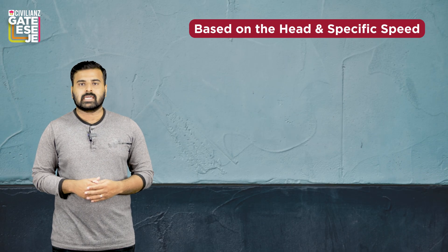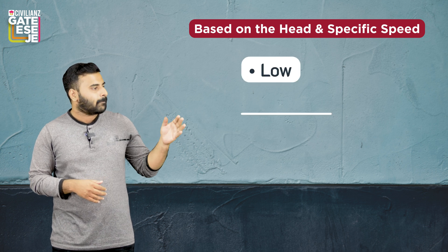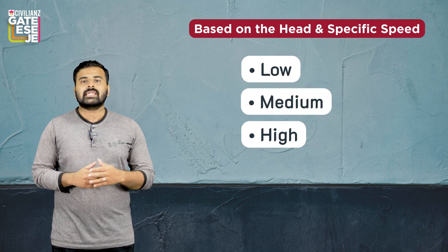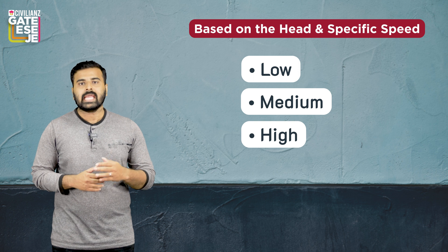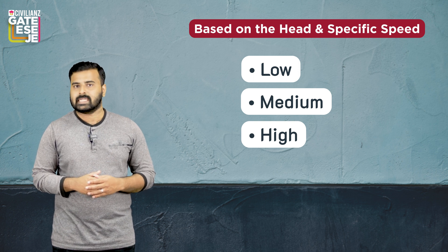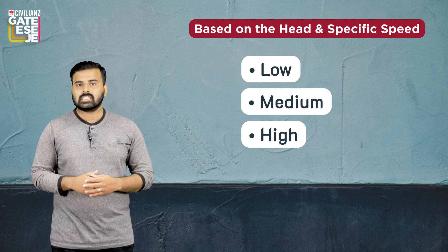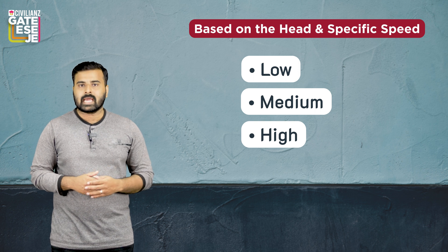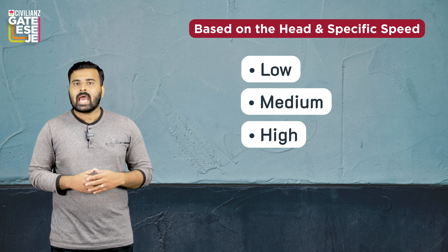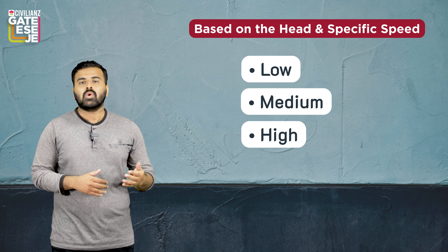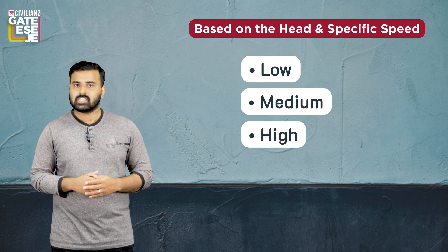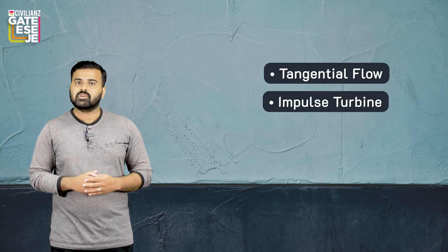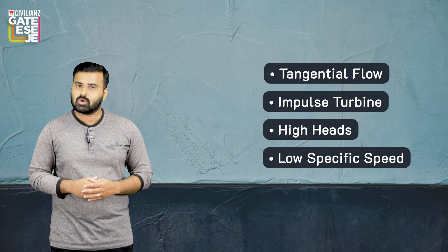Based on specific speed and head, turbines are generally classified into three categories: low, medium, and high. A Pelton wheel is preferred when high head and low specific speed is required. A Francis turbine is used when medium head and medium specific speed is required. Kaplan and propeller turbines are preferred when low head and high specific speed is required. So in short, the Pelton wheel is a tangential flow impulse turbine used for high heads and low specific speeds.